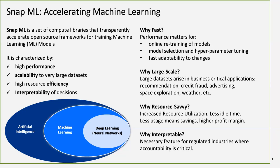Snap ML is extremely resource-efficient. When dealing with large datasets on GPU, memory is limited — typically 16 GB or 32 GB on a V100. To handle out-of-memory issues, Snap ML performs optimized swapping between system and GPU memory. It also preserves model interpretability, which is critical in financial services and other industries where models must be explained before going to production.